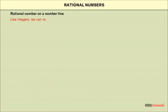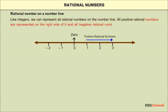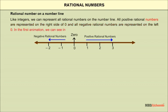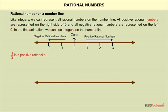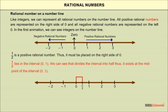Rational numbers on a number line: like integers, we can represent all rational numbers on the number line. All positive rational numbers are represented on the right side of 0 and all negative rational numbers on the left side of 0. In the first animation, we can see integers on the number line. 1/2 is a positive rational number, so it must be placed on the right side of 0. 1/2 lies in the interval (0, 1) and exists at the midpoint of that interval.